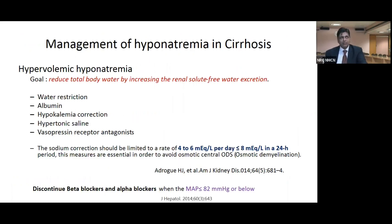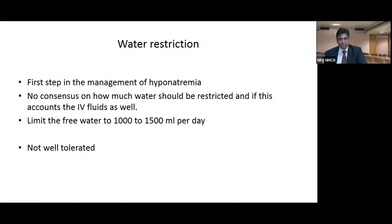Management of hyponatremia offers limited options. The goal is to reduce total body water by increasing renal solute-free excretion. Methods used include water restriction, albumin, hypokalemia correction, hypertonic saline, and vasopressin receptor antagonists. Sodium correction should be less than 8 mEq per day to avoid osmotic demyelination. Beta blockers and alpha blockers should be discontinued if MAP is less than 80 mmHg.